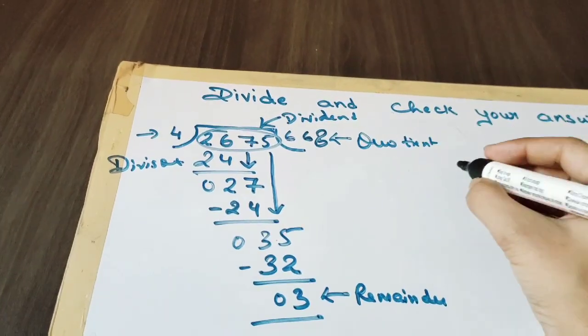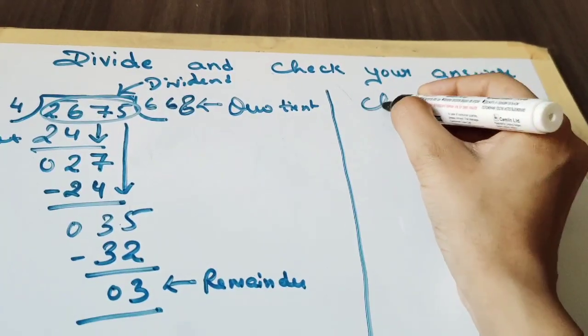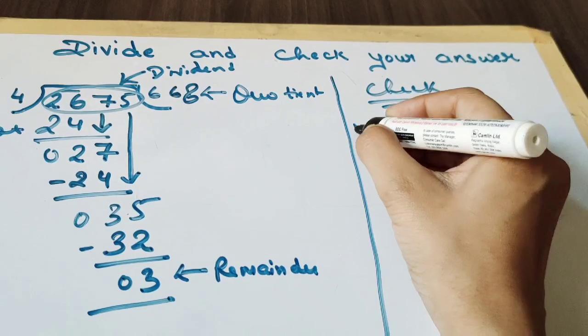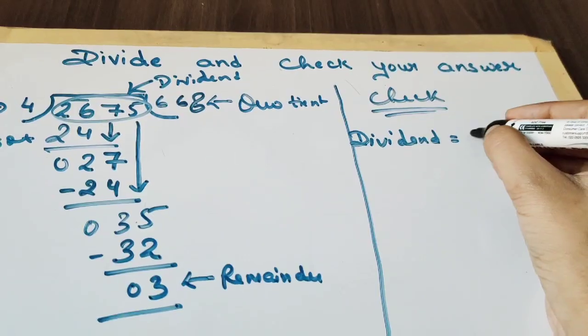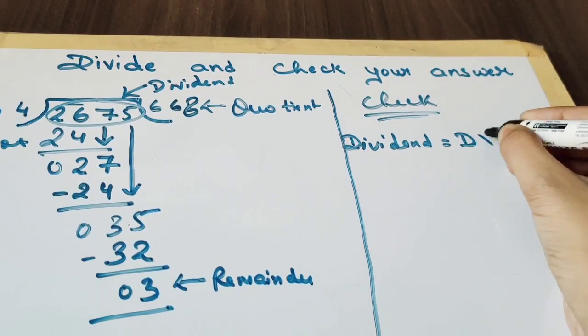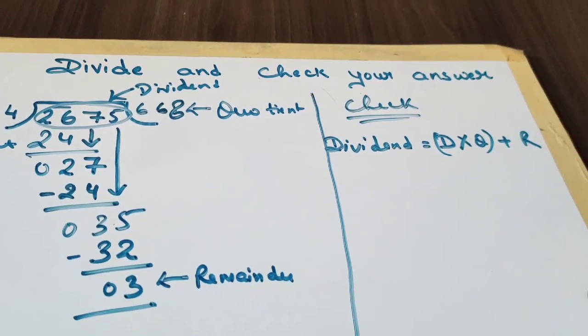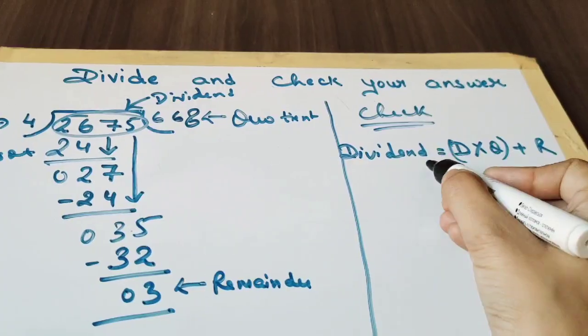Now let's write these things in the formula. The formula for checking is: dividend equals to divisor multiplied by quotient plus remainder. This is the formula. Now we will put the values. Dividend is 2675.